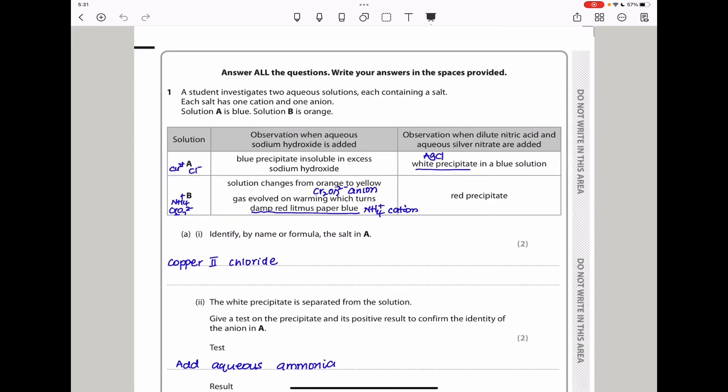A student investigates two aqueous solutions, each containing a salt. Each salt has one cation and one anion. Solution A is blue and solution B is orange. Here they've given us the information. We can see the observation when aqueous sodium hydroxide is added. Solution A, there is a blue precipitate which is insoluble in excess sodium hydroxide. And then the observation with dilute nitric acid and aqueous silver nitrate, we see a white precipitate in a blue solution.